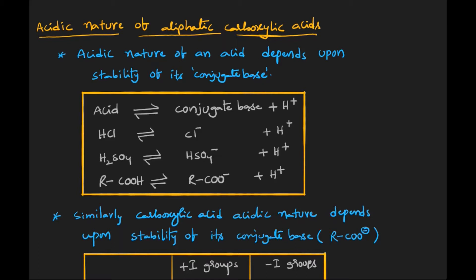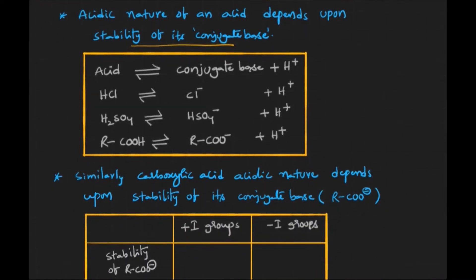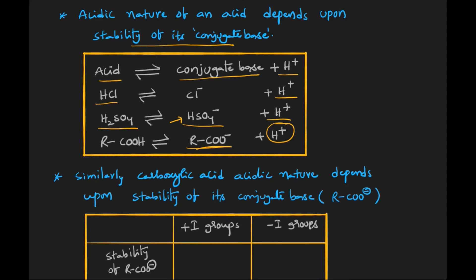In this video we are going to discuss the acidic nature of aliphatic carboxylic acids. Acidic nature of any acid depends on the stability of its conjugate base. The conjugate base is the leftover part after releasing a proton. For HCl, the remaining negative part after releasing H⁺ is its conjugate base. Similarly for H₂SO₄, and for carboxylic acid, the carboxylate ion is its conjugate base.